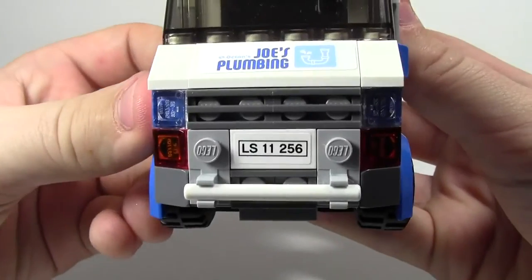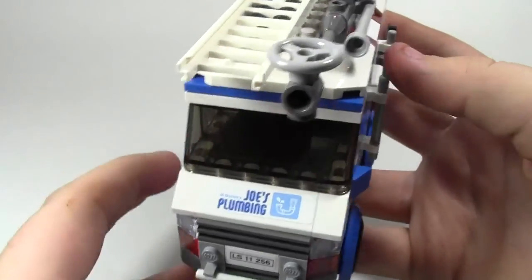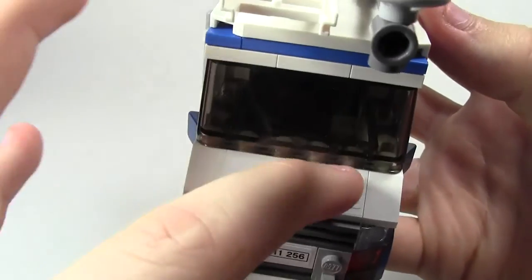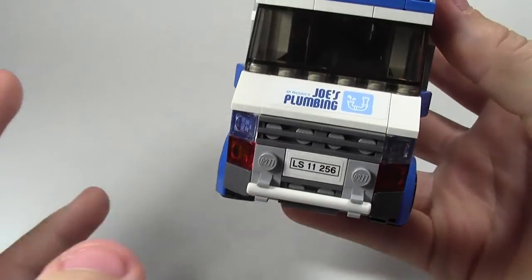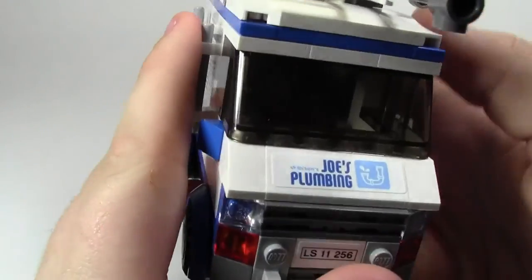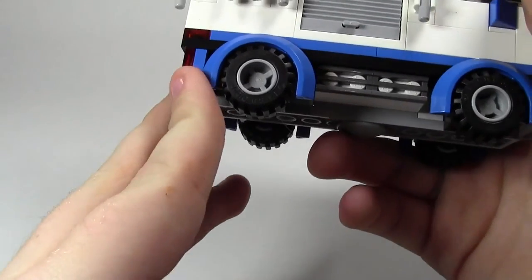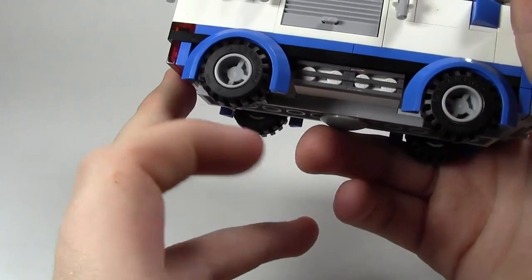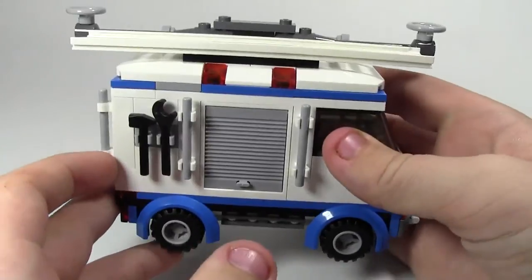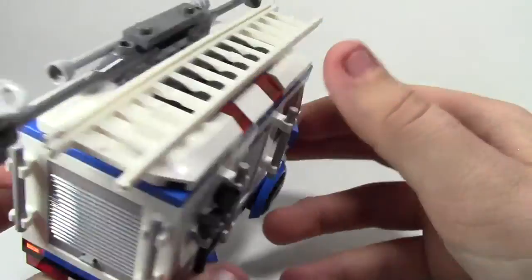Lots of stickers on this truck, the license plate. Joe's Plumbing, I honestly think, should have been backwards because, like, if you're reading in a rearview mirror, it's frontwards. I think that's how that works. I don't even know. But, very cool. Pretty standard wheels are used on this set. Not much to say about it.